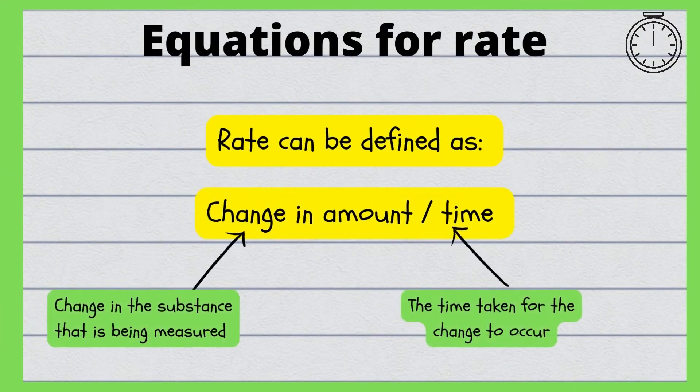Rate can be defined as the change in amount of a substance over the time taken. The amount is the substance that's being measured and the time is how long it takes for the reaction to take place.